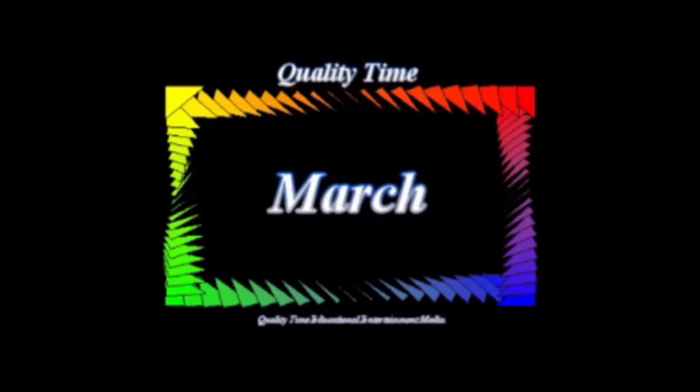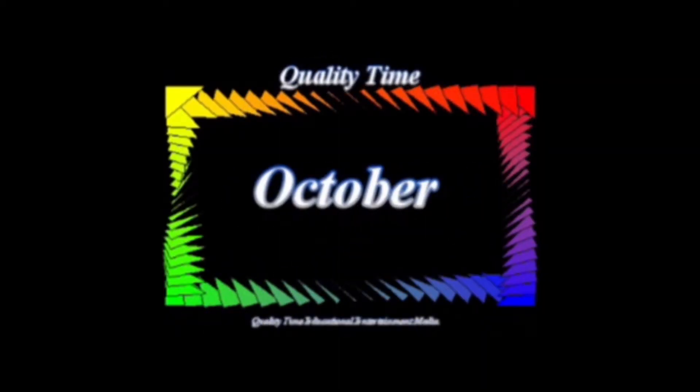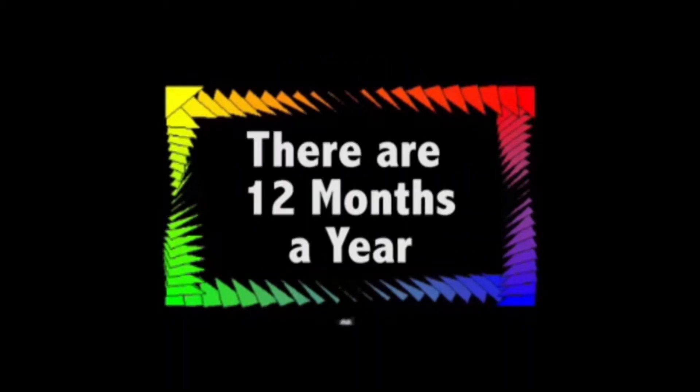January, February, March, April, May, June, July, August, September, October, November, December — the 12 months in a year.